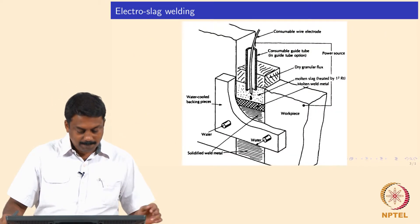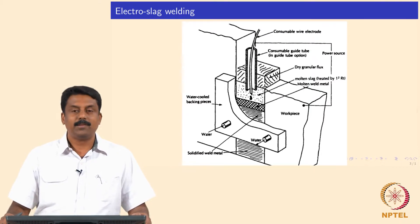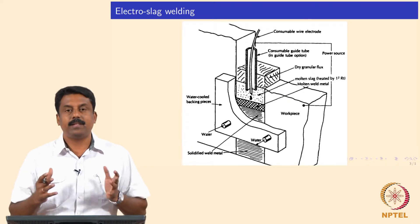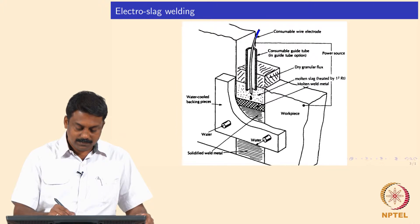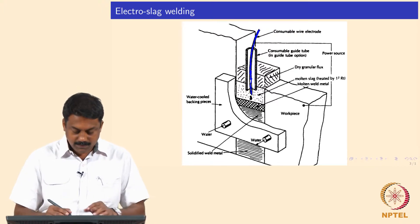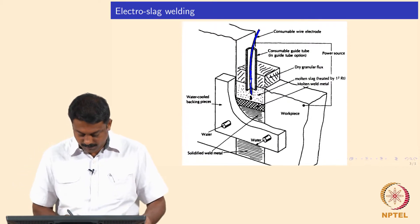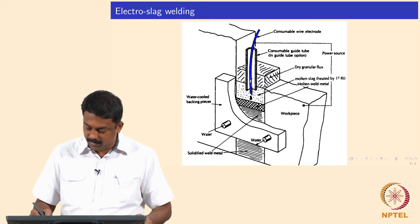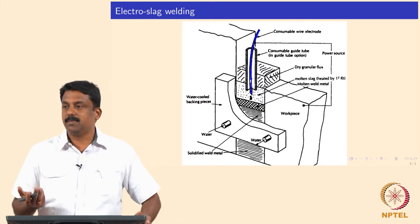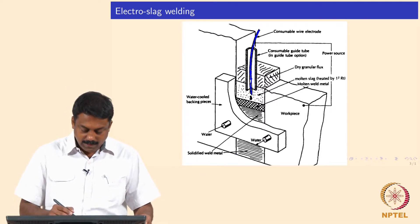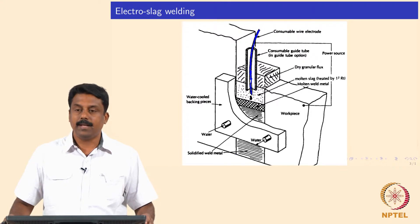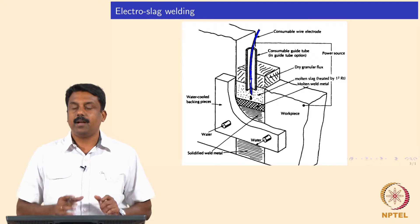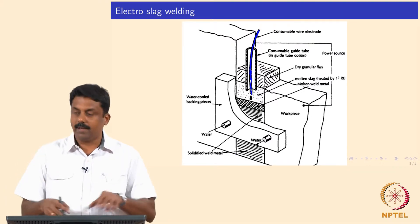Electro slag welding is widely used for thicker sections. The process works like this: we have a filler wire which is fed into the weld cavity — this is the interface to be welded. The filler is connected to the power source and the workpiece is also connected to the power source. We use DC current in most cases. At the start of the weld, we strike an arc between the filler and the base material interface. The arc provides heat initially; as soon as the arc is struck, we start adding flux powders to the weld cavity.